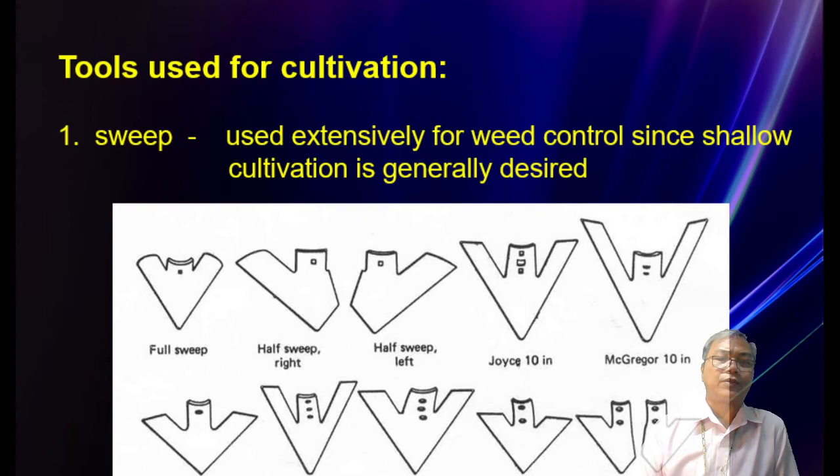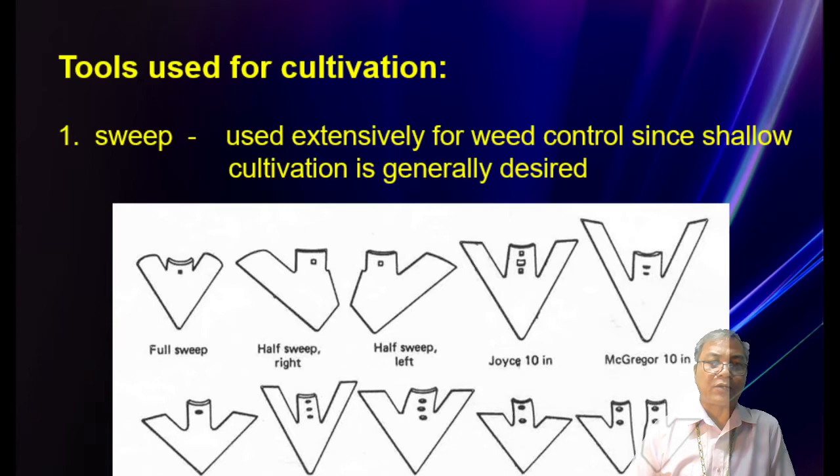Tools used for cultivation include the sweep, which is used extensively for weed control since shallow cultivation is generally designed. These sweeps for cultivators are designed to cut the root system of weeds in between the row crops.